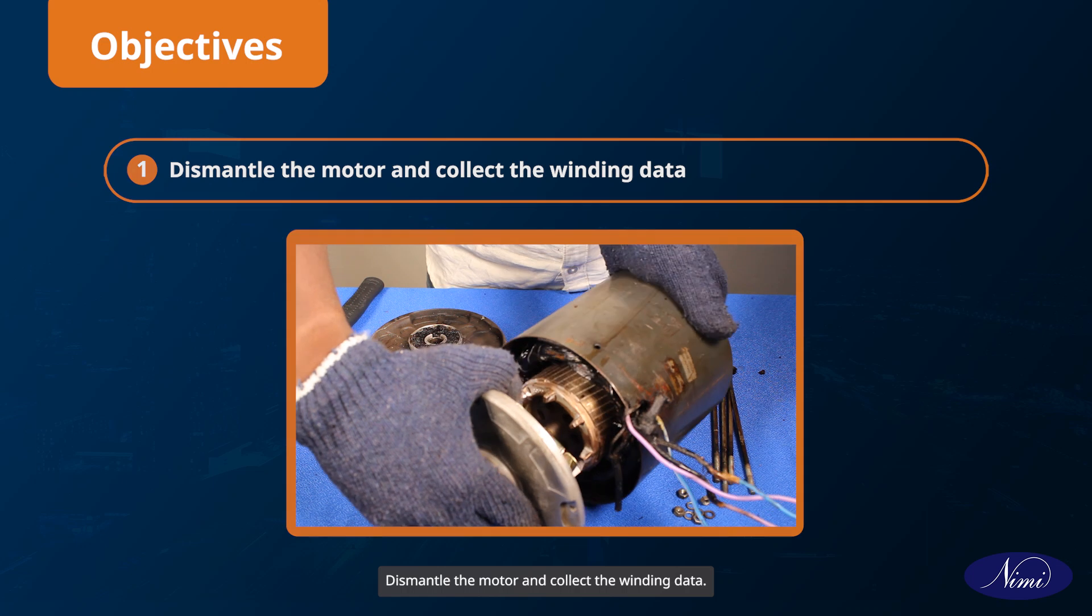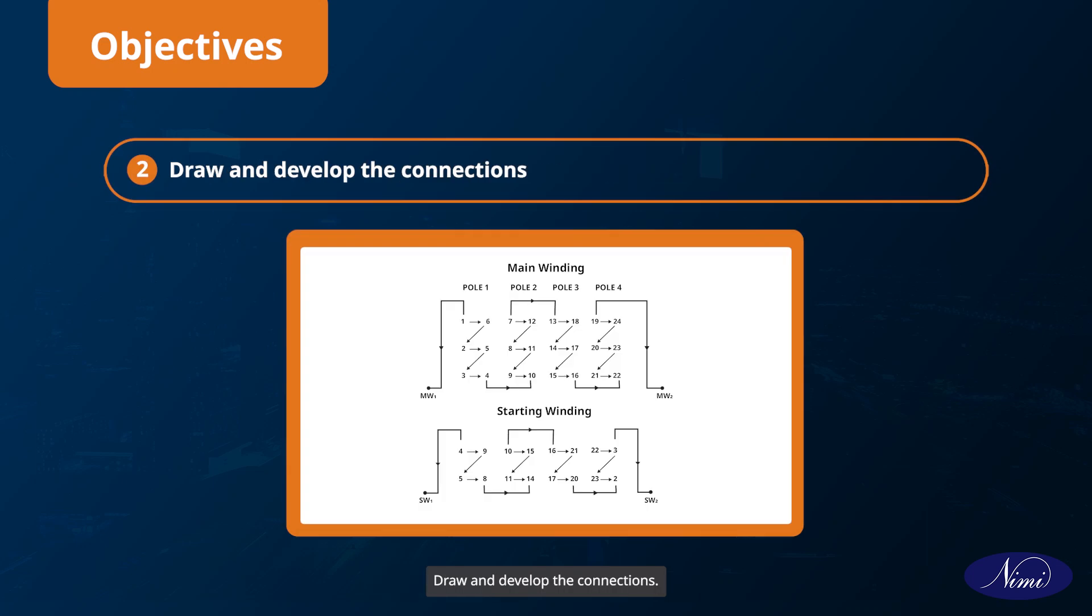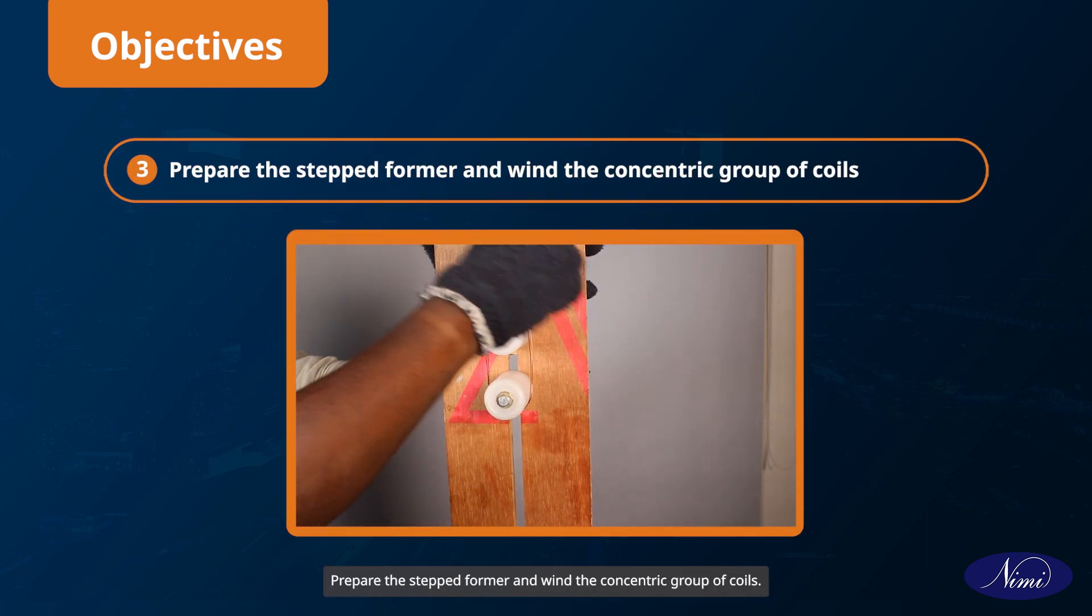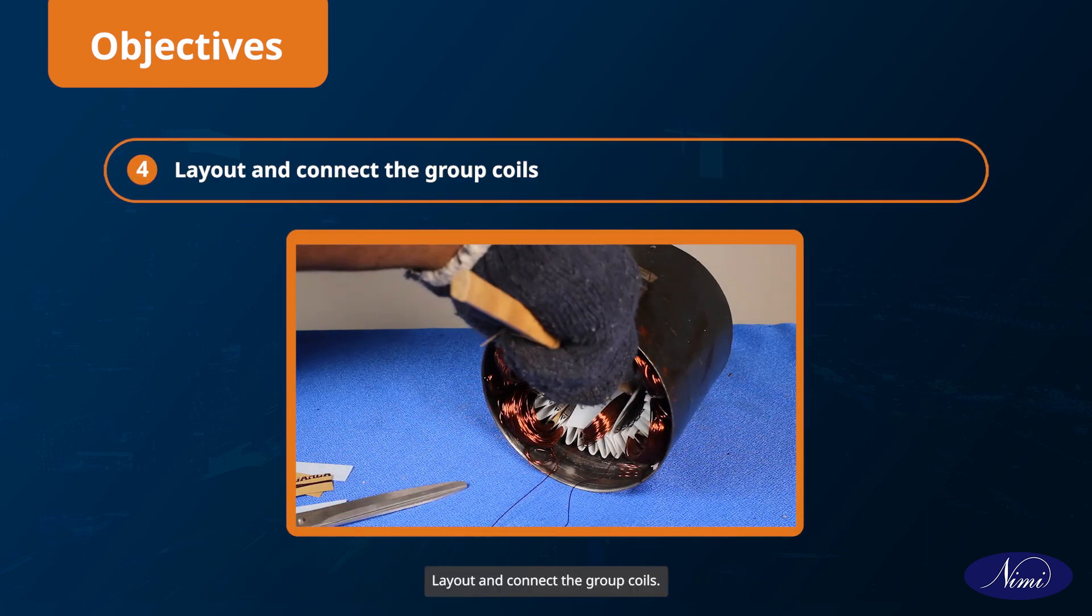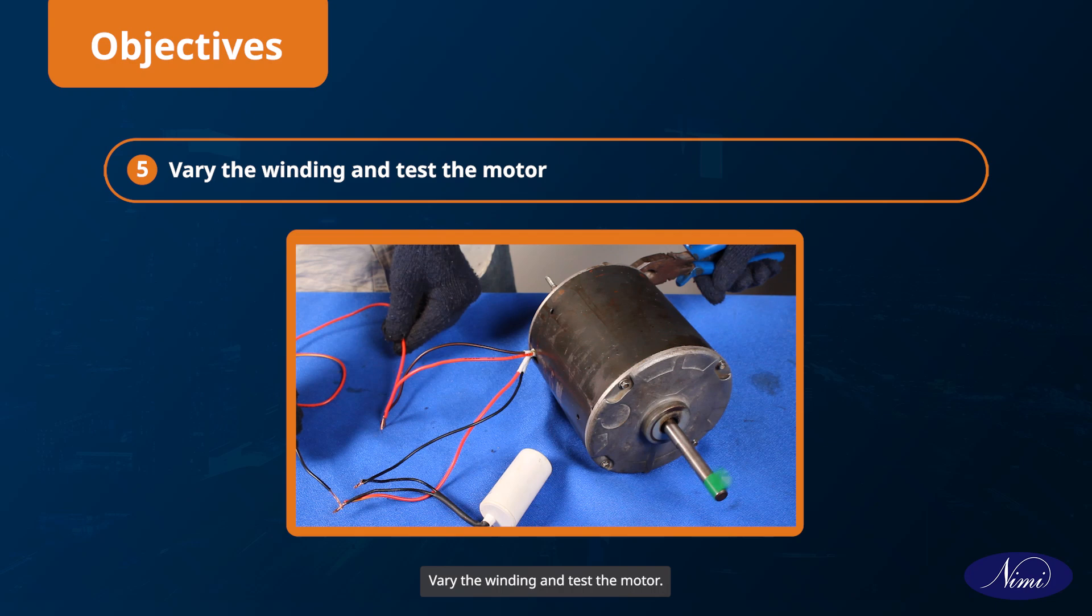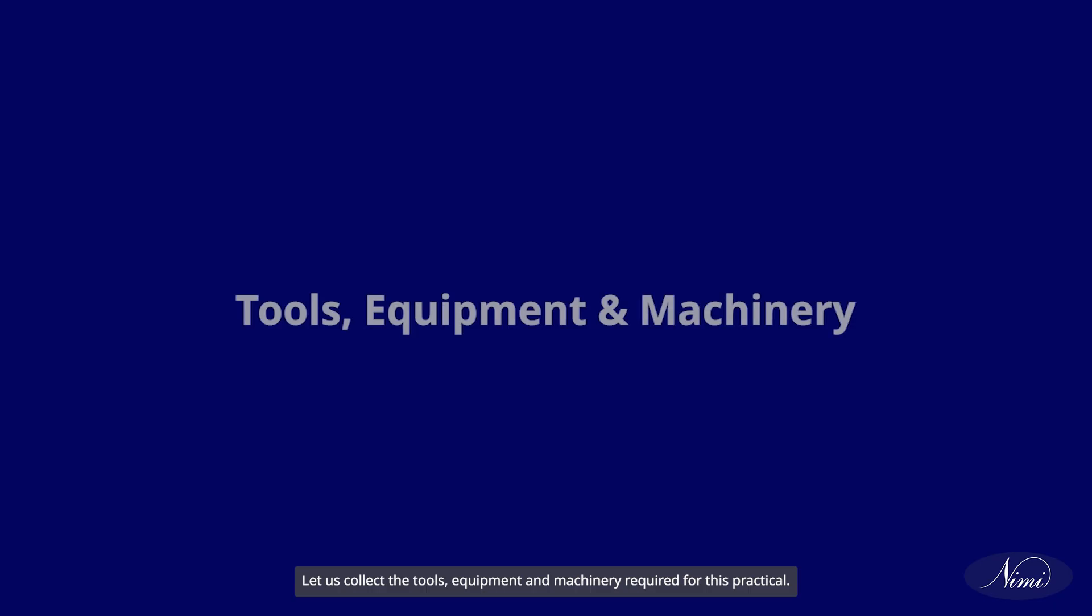Dismantle the motor and collect the winding data, draw and develop the connections, prepare the stepped former and wind the concentric group of coils, lay out and connect the group coils, vary the winding and test the motor. Let us collect the tools, equipment, and machinery required for this practical.